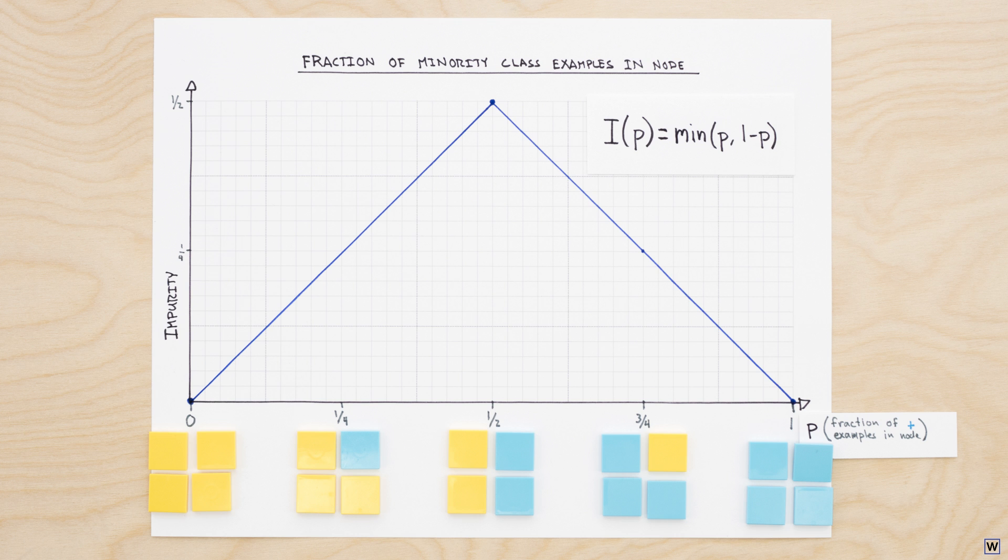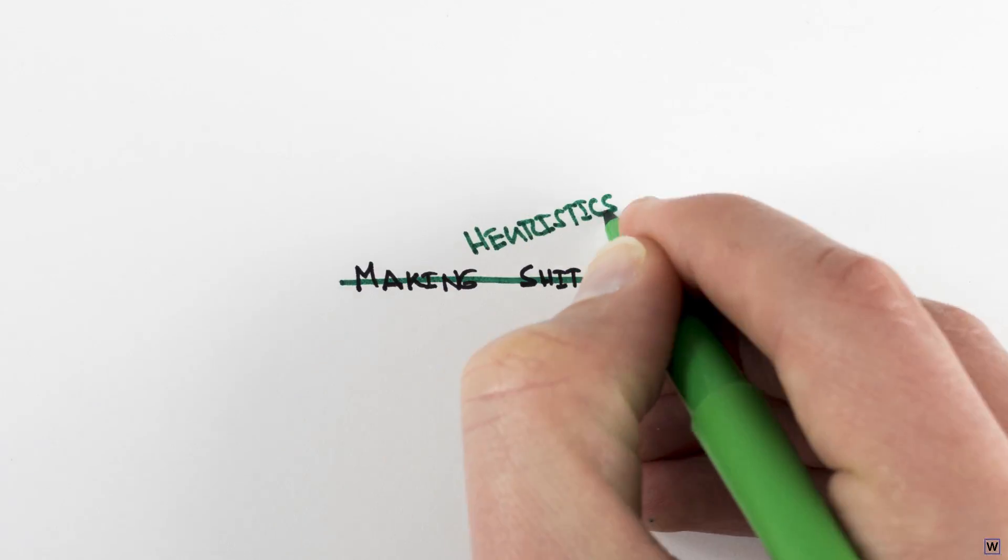Now, before we begin computing, note that there are, of course, other ways we could measure the impurity of our nodes. We have no deep reason to believe that this is the one right strategy. We're really just trying out ideas that seem reasonable. This actually happens all the time in machine learning. But fortunately, practitioners have developed a name for this sort of thing, so it actually sounds like we know what we're talking about. Heuristics.